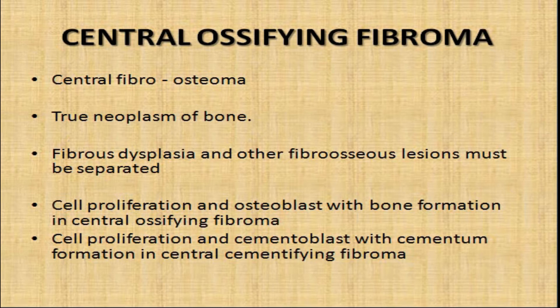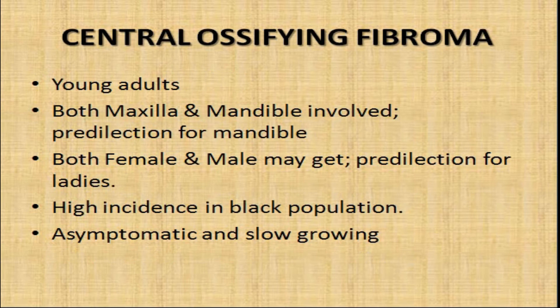Central ossifying fibroma can be seen in young adults. Both maxilla and mandible may be involved, with a slight predilection for the mandible. Regarding sex, both males and females may develop this lesion, with a slight predilection for females. There is a high incidence rate in the Black population. A key feature is that it is an asymptomatic lesion with very slow growth.